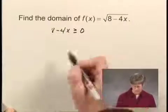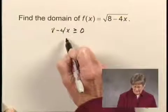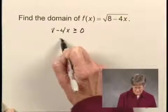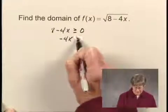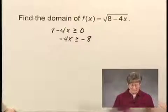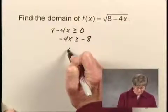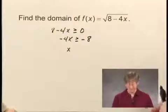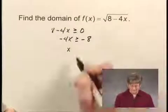I'm going to start by subtracting 8 on both sides. So I have negative 4x is greater than or equal to negative 8. And now I'll divide both sides by negative 4. Remember, when we divide both sides of an inequality by a negative number, we have to reverse the inequality symbol.